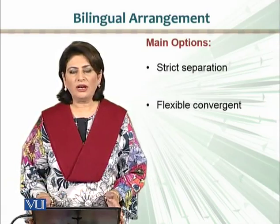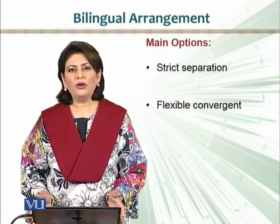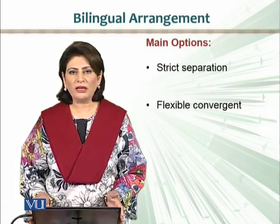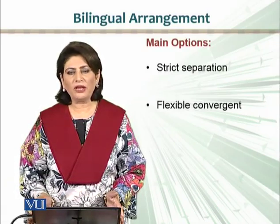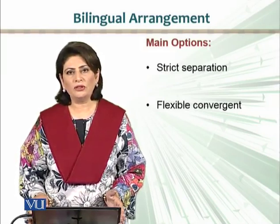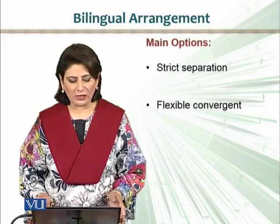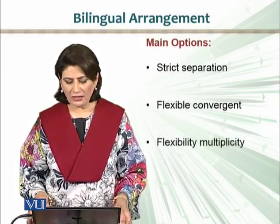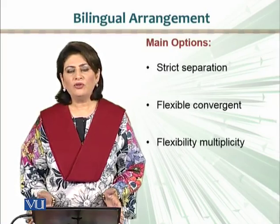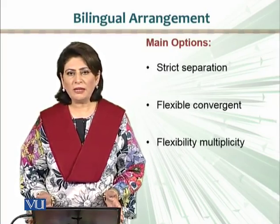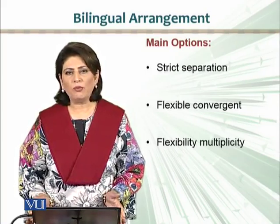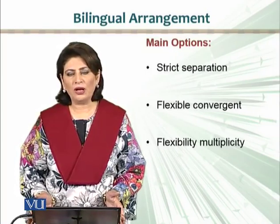Flexible Convergent is more related to sliding bilingualism — you introduce both languages, but gradually and flexibly, and you move on to using more of the dominant language rather than the minority language. And then Flexibility Multiplicity is where you use languages flexibly and can take both languages to a higher level.